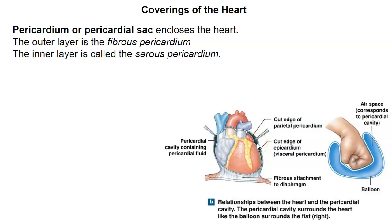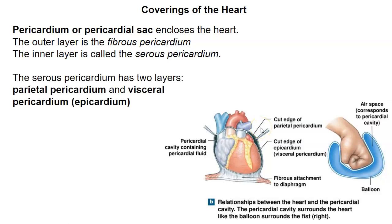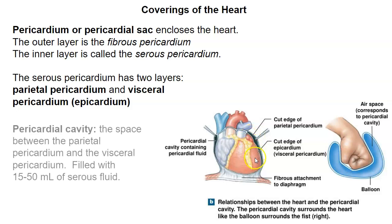And then there's an inner layer called the serous pericardium. The serous pericardium has two layers: it has a parietal pericardium and then the visceral pericardium, which is actually on the surface of the heart. The pericardial space, or cavity, is in between, and that's where there's fluid — not very much, between 15 and 50 milliliters.